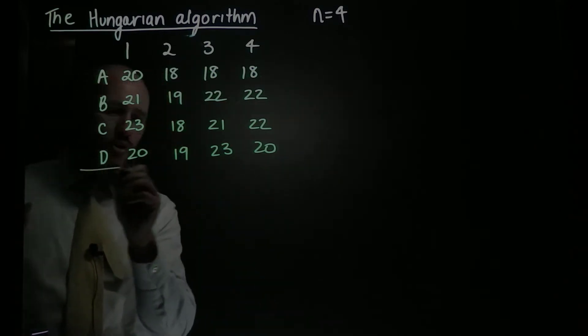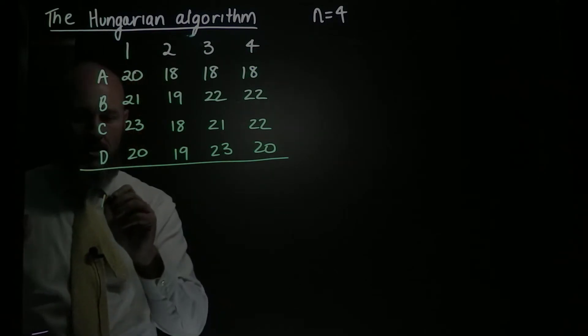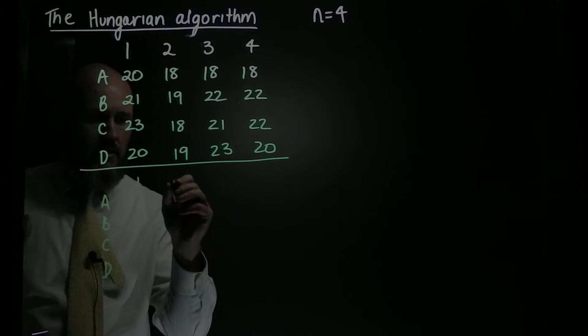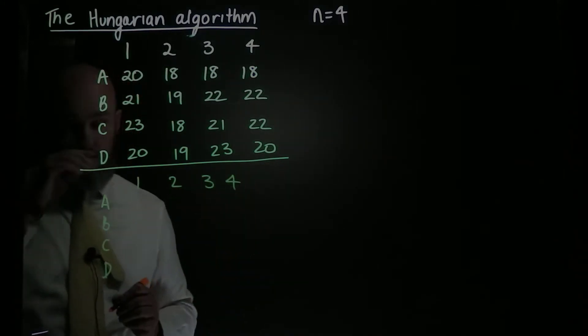I'm going to draw a line underneath, make it clear where the separation is, and I'll set up my A, B, C and D, 1, 2, 3 and 4, and we'll start going a little bit smaller.